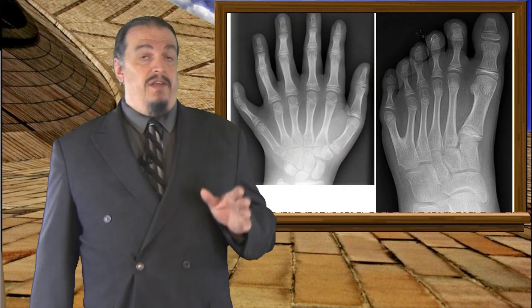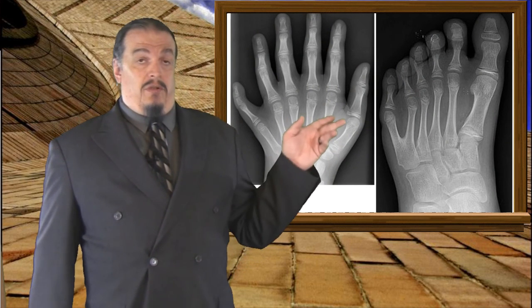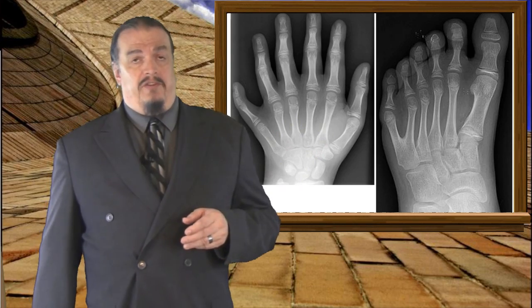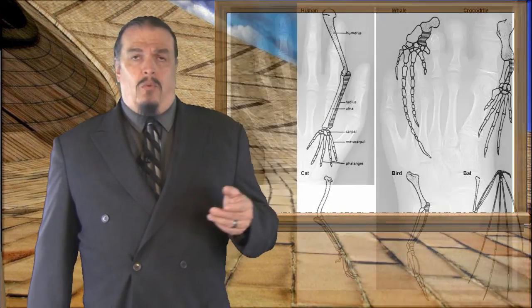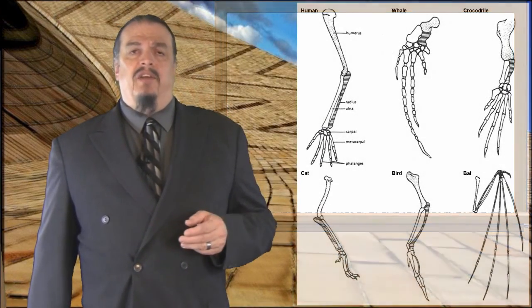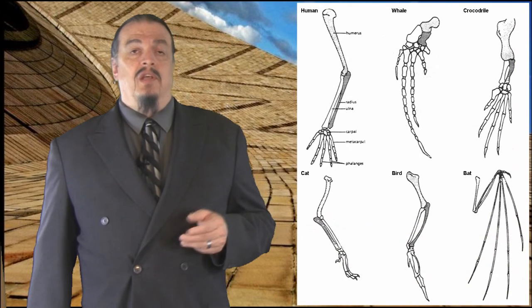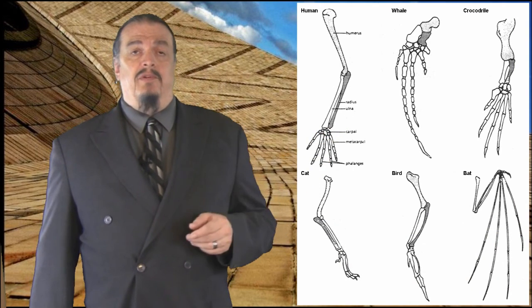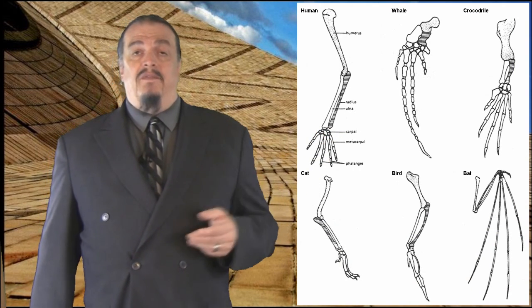Why, if polydactyly is the dominant allele, do most humans and cats have only five digits? It's because the allele for more than five fingers or toes is not as common. Why do many animals have five digits then? Even whales — if you look at the bones inside their flippers, they have five digits.